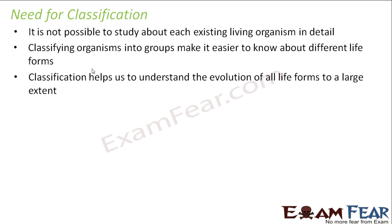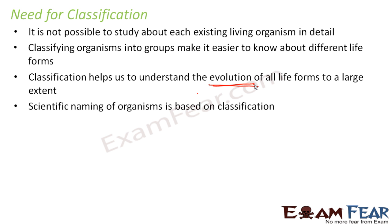Classification also helps us understand the evolution of all life forms to a large extent. As we go ahead, we'll see that with the help of classification we get to know how a life form came into existence. Life forms have not always existed on earth — everything started from somewhere, and many different life forms came up from earlier ones. Classification gives us an idea of how a particular life form originated.